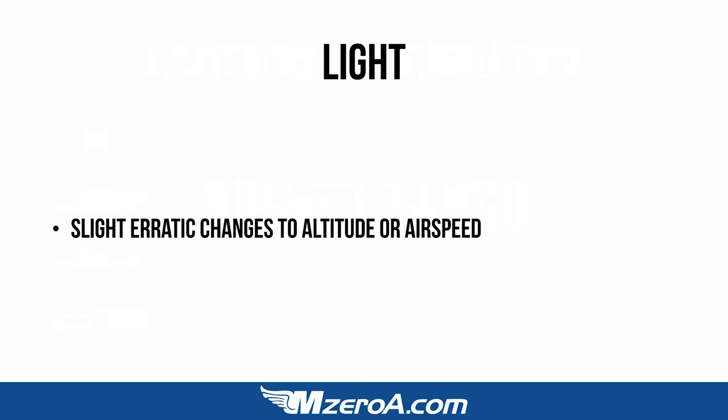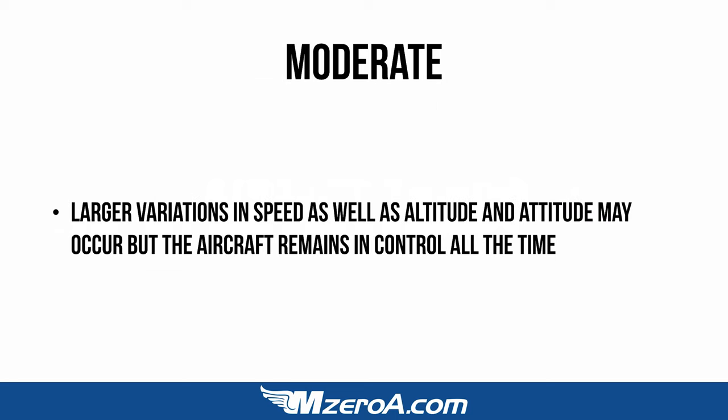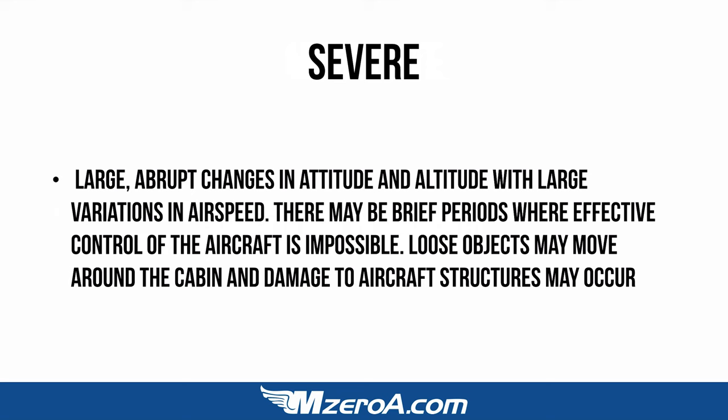Light is categorized as slight, erratic changes to altitude or airspeed. Moderate involves larger variations in speed as well as altitude and attitude, but the aircraft remains in control at all times. Severe involves large, abrupt changes in attitude and altitude with large variations in airspeed — there may be brief periods where effective control of the aircraft is impossible.